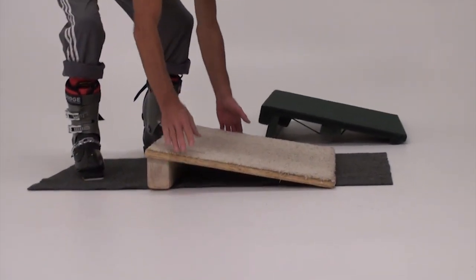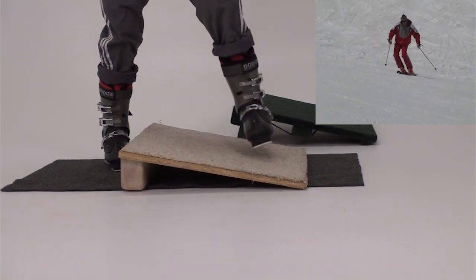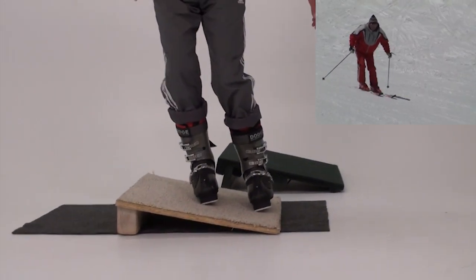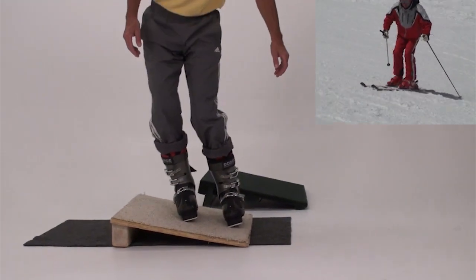A simple fixed slant board is easy to build. Make sure to glue or staple carpet to the surface. It's a great tool for home ski practice.